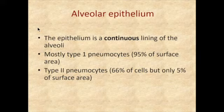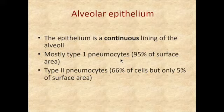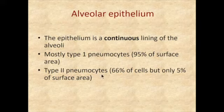The type 1 pneumocytes are very stretched out, so you can't really even see them as cells unless you cut through the nucleus. The type 2 pneumocytes are not as stretched out, so they're a lot rounder in shape. They supposedly make up more of the cell population and they take up the places where the alveoli come together, showing up in little bunches or groups.